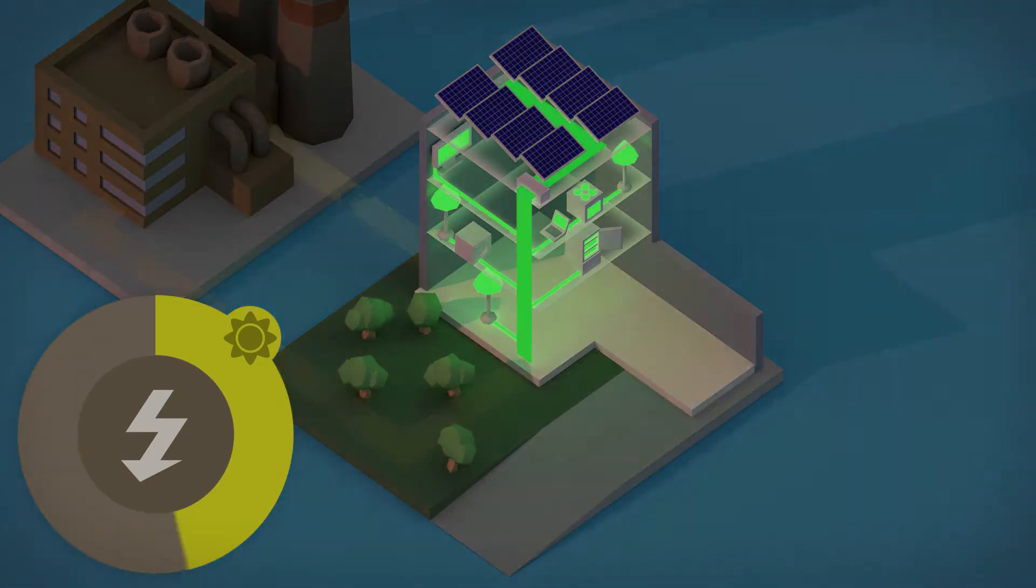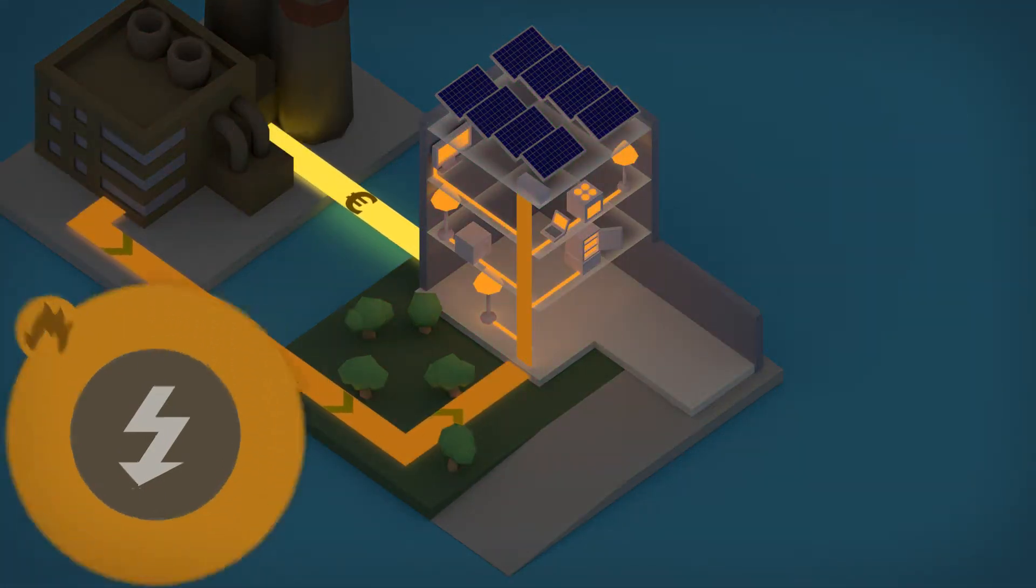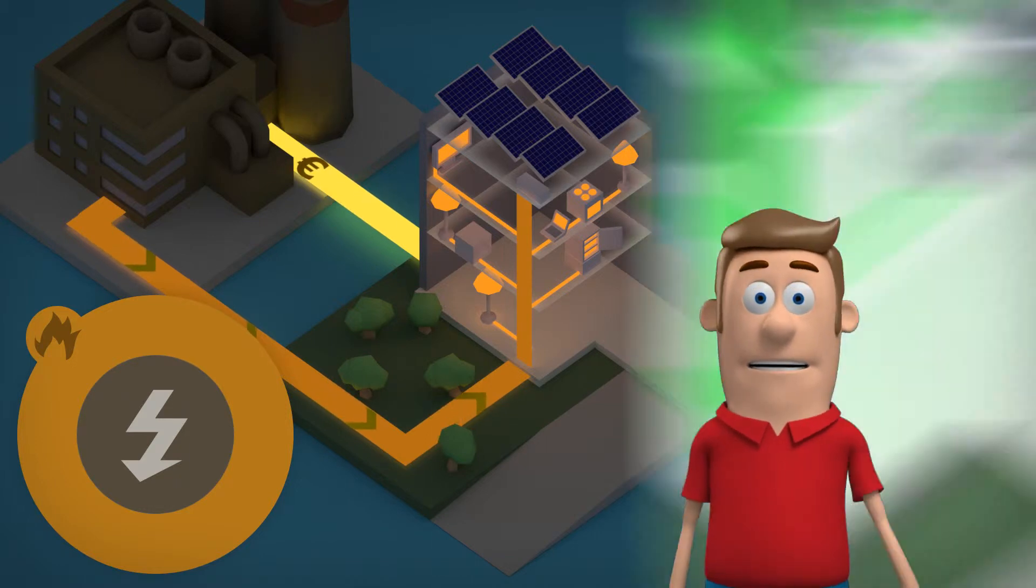But when the sun isn't shining, the panels sit idle and the power plant has to operate at full capacity again.